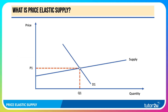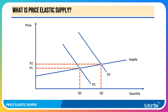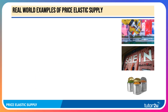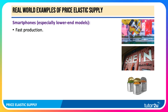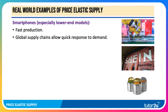Drawing a diagram — here's a price elastic supply curve with initial equilibrium at price P1 and Q1. If demand shifts out from D1 to D2, because supply is price elastic, supply can expand quite easily from Q1 to Q2 with only a small increase in price. Good examples would be things like smartphones, especially entry-level smartphones, which are open to mass production and fast production. Businesses have built up diversified global supply chains which allow a quick response to demand changes.